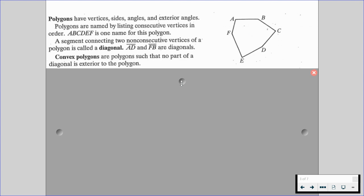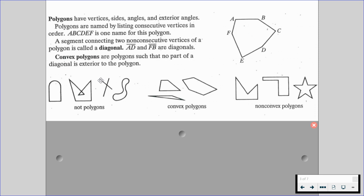So convex polygons are polygons such that no part of a diagonal is exterior to the polygon. So on the left-hand side, these are not polygons. In the middle, these are convex polygons. And on the right-hand side, we have what are called non-convex polygons. They're polygons because they all have rigid sides and vertices, but we have a diagonal that could be in the exterior.